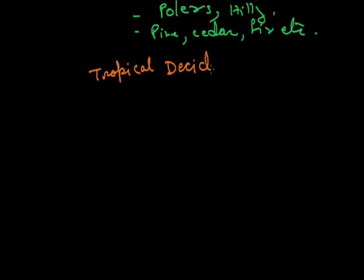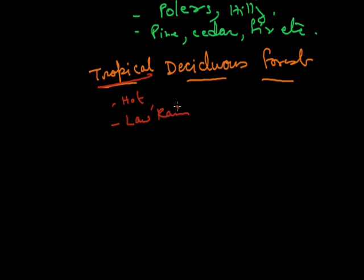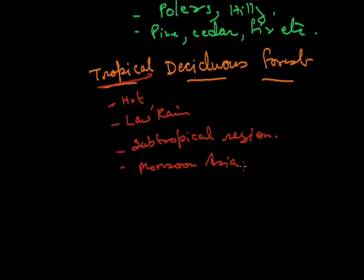Tropical deciduous forest. By name again it is clear - tropical is the hot region, deciduous means low rainfall is there in this region and that is why the trees shed their leaves once a year, especially just before the summer season known as the autumn season. They are found in the subtropical region of the world. In India also they are found - the maximum part of India is covered with these types of forest. These are found in monsoon Asia - monsoon Asia means South Asia, Southeast Asia and East Asia, Brazil, North Australia etc. These types of trees are like teak, sal, shesham etc.